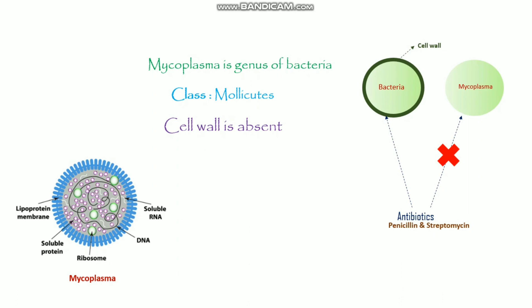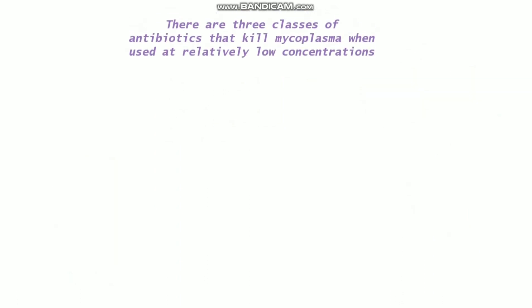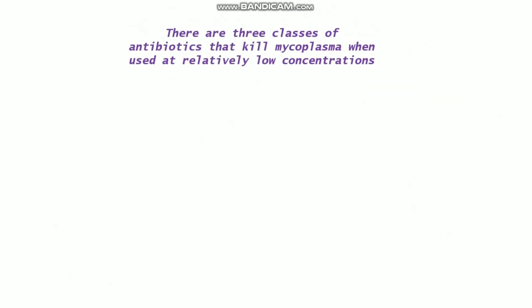This kind of antibiotic has a different mode of action. There are three classes of antibiotics that kill mycoplasma when used at relatively low concentrations, and those are tetracycline, quinolones, and macrolides.